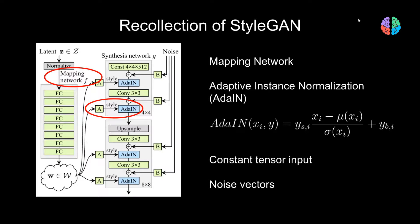We additionally have a constant tensor of size 4x4x512 feeding the synthesis network. We have noise vectors added to the synthesis network through the affine transformation layer B.